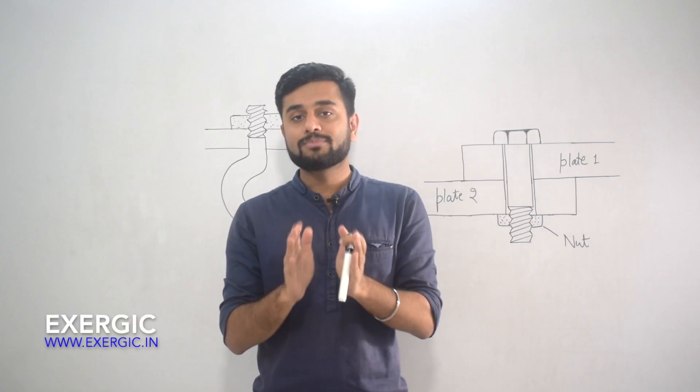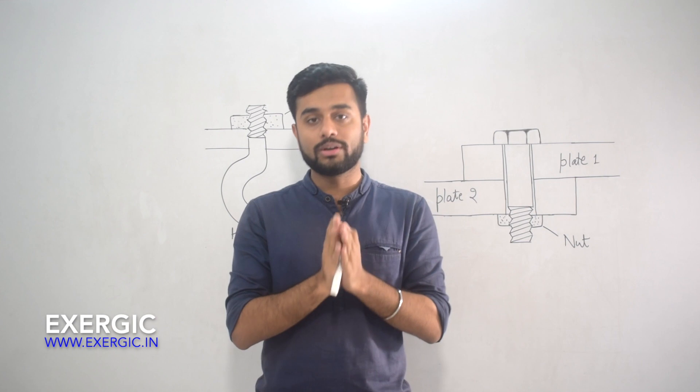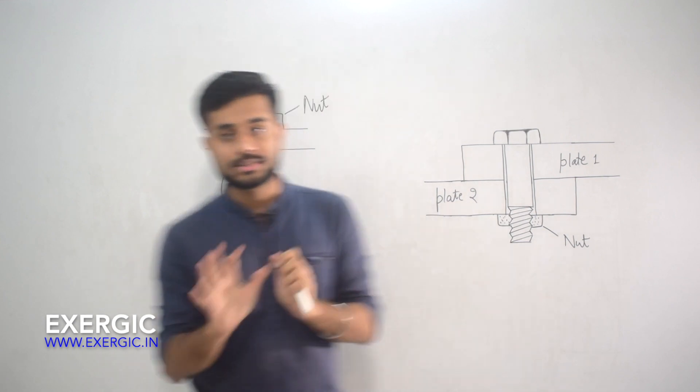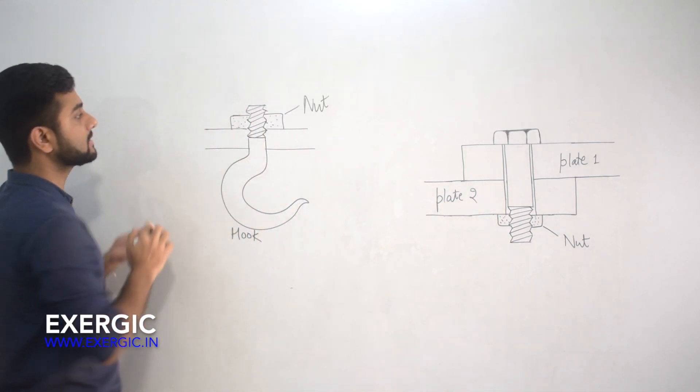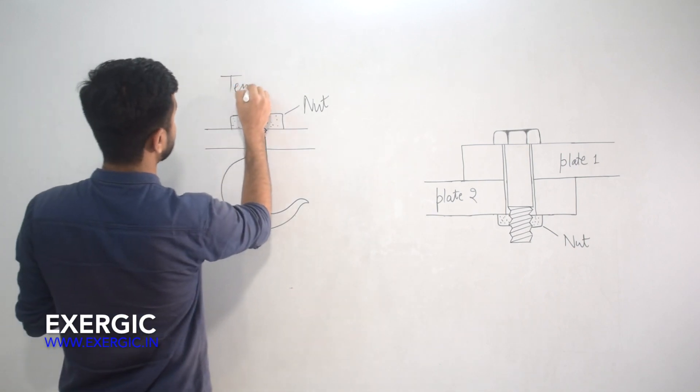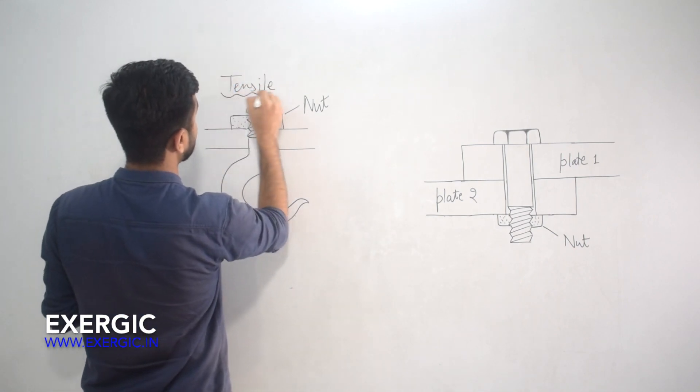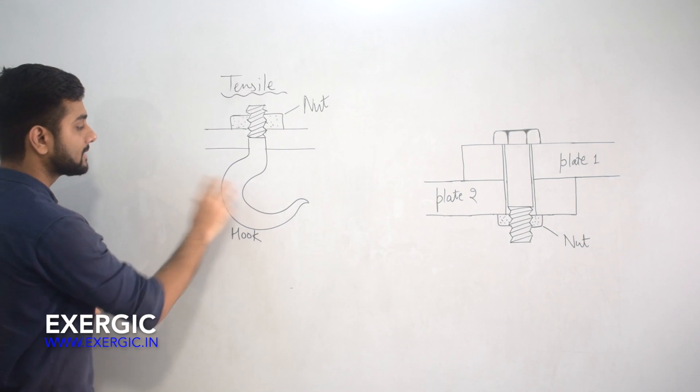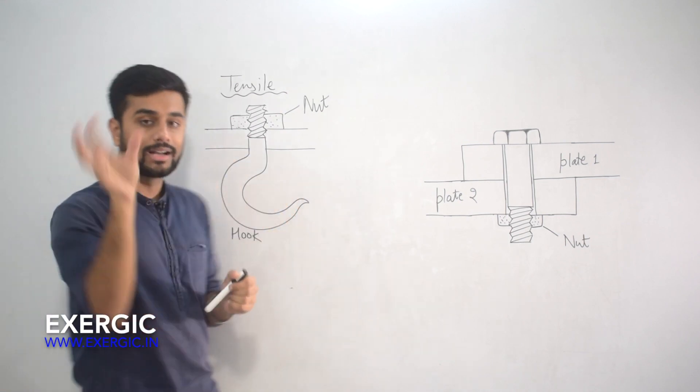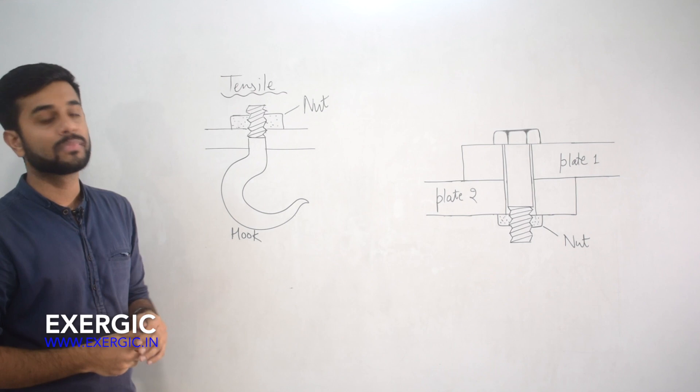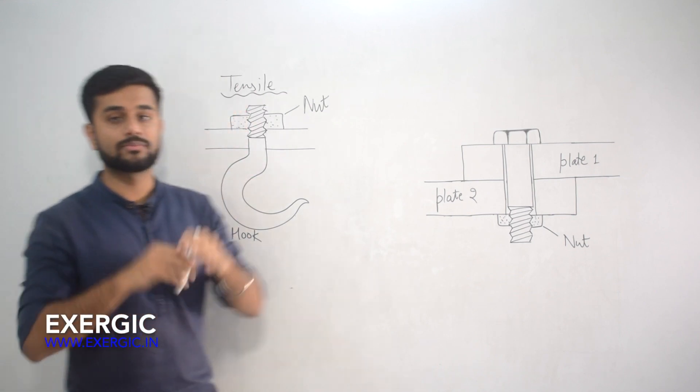The types of stresses that can act in a bolted joint are two. Firstly, I have shown here tensile stress. Here I have given an example of a hook, of a crane hook which is used to lift the weights, and this is bolted to some support.